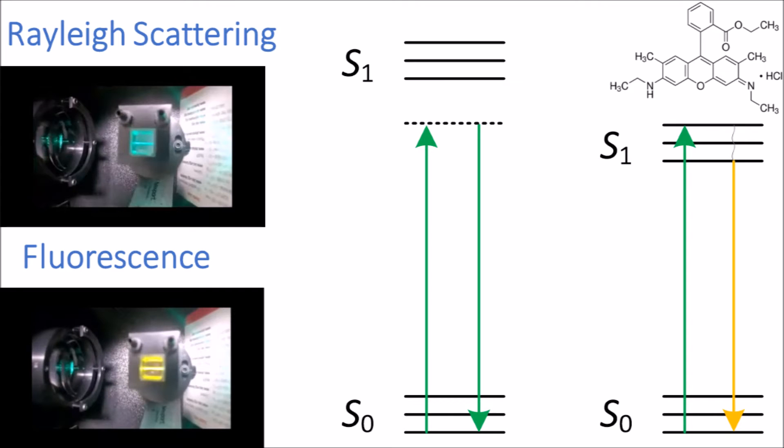In the case of the fluorescence, you can see that the wavelength has clearly shifted in color. It went from green to yellow. This means it's lost some energy. This shift in color can be described using a Jablonski diagram.